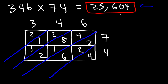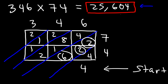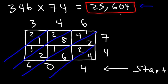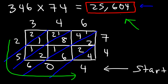Now sum each diagonal band. Starting in the first region: just 4. Next: 2 plus 2 plus 2 plus 6 is 10 — write 0, carry 1. Then 1 plus 4 is 5, plus 8 is 13, plus 1 is 14, plus 2 is 16 — write 6, carry 1. Then 2 plus 1 is 3, plus another 1 is 4, plus 1 is 5. Finally, just a 2. Reading the answer: 2, 5, 6, 0, 4 — that's 25,604. That's lattice multiplication. Now you have many different ways to multiply two numbers. Thanks for watching.